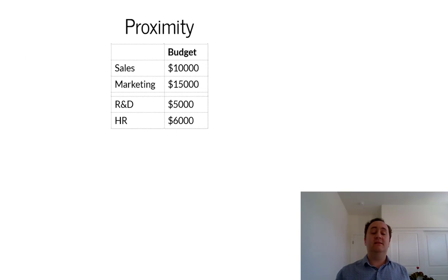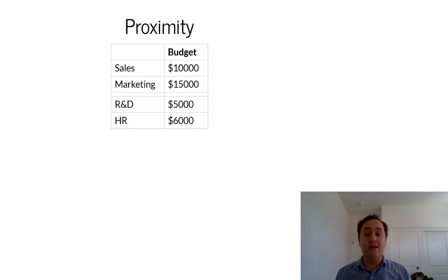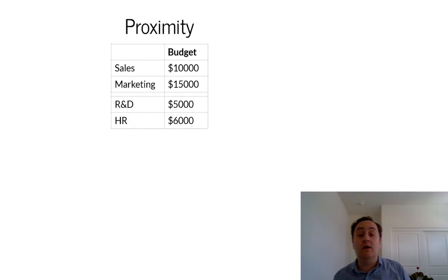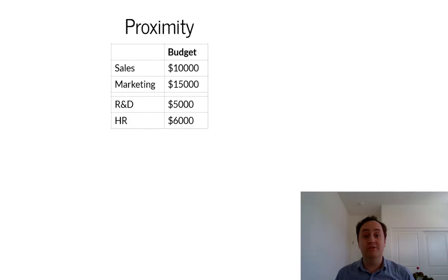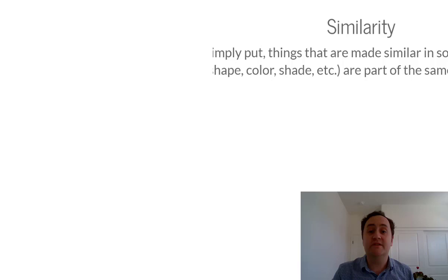Let's do some quick examples of some of these things. Proximity — if you put things closer together, they feel like they go together and help you distinguish what's going on. So let's take this table, for example. This is a very basic undecorated table of some numbers from the budget. All that I've done is taken a blank row and put it between marketing and R&D. That immediately makes us think about marketing and sales going together and R&D and HR going together — it distinguishes the top two categories from the bottom two. So if I was trying to tell the story that sales and marketing have much bigger budgets than R&D and HR, that makes that comparison a lot easier. Just that tiny little thing makes it a lot easier for our brains to process what's going on.